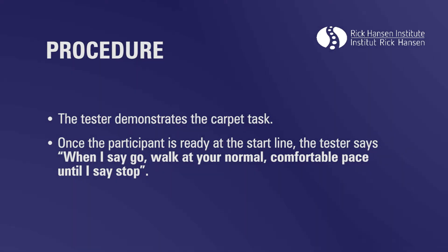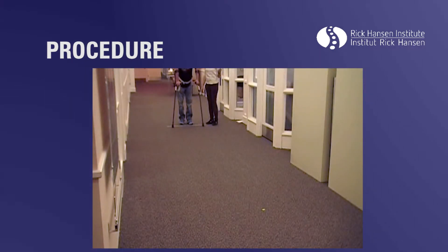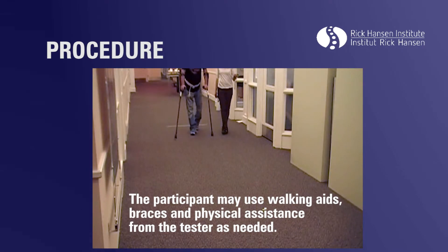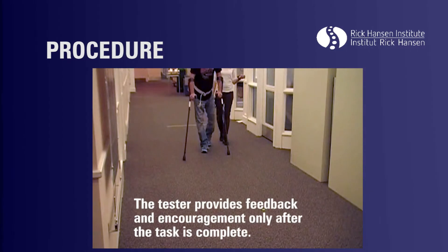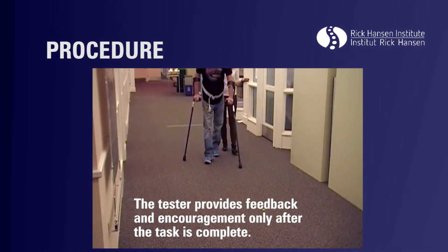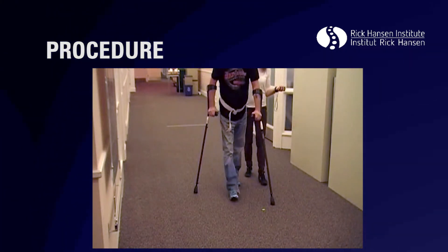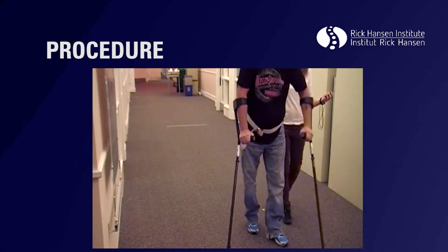The tester demonstrates the carpet task once. When the participant is ready at the start line, the tester says: 'When I say go, walk at your normal comfortable pace until I say stop.' The tester says 'go' and begins timing. The tester stops timing once both of the participant's feet have crossed the end line, then instructs the participant to stop and records the time and assistance rating.